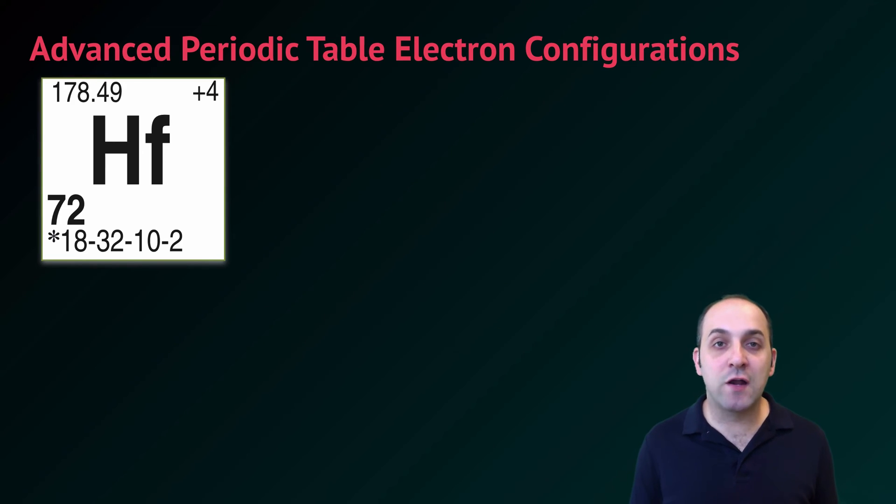When thinking about basic electron configurations and the periodic table there are a couple of things that you really should pay attention to. The first we can see here with element number 72 which is hafnium.